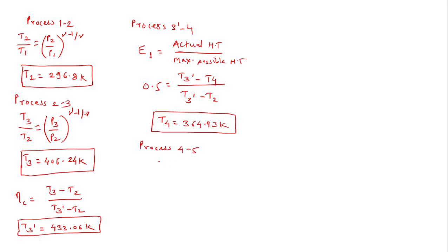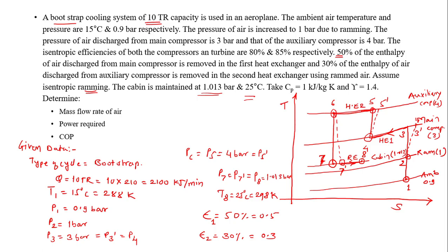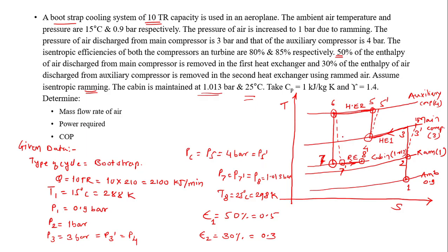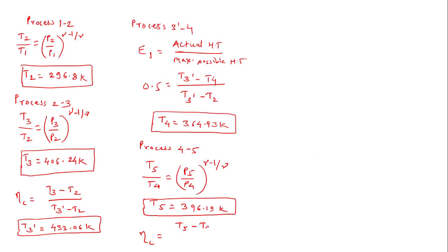Process 4 to 5 is again an isentropic process in the auxiliary compressor. The relation is T5 by T4 equals (P5 upon P4) raised to (gamma minus 1) upon gamma. Since T4, P4, and P5 are known, T5 is calculated to be 396.19 Kelvin. Since there are losses in the auxiliary compressor, efficiency is applied again. The efficiency formula is (T5 minus T4) divided by (T5-dash minus T4), giving the minimum difference upon maximum difference, from which T5-dash can be obtained.